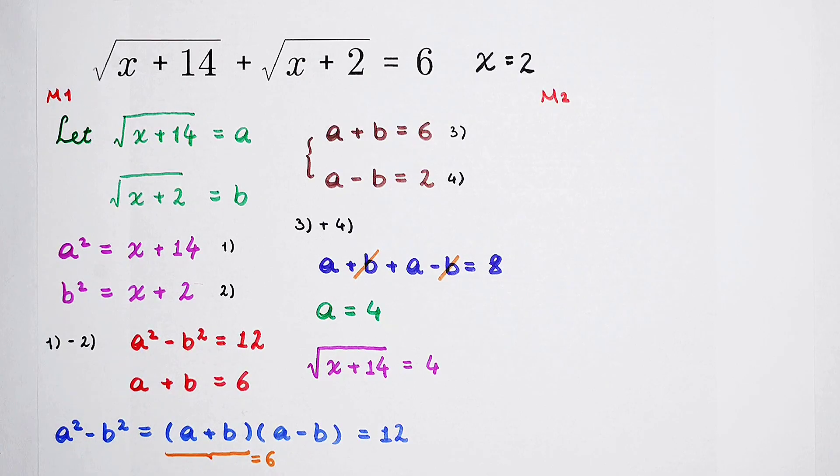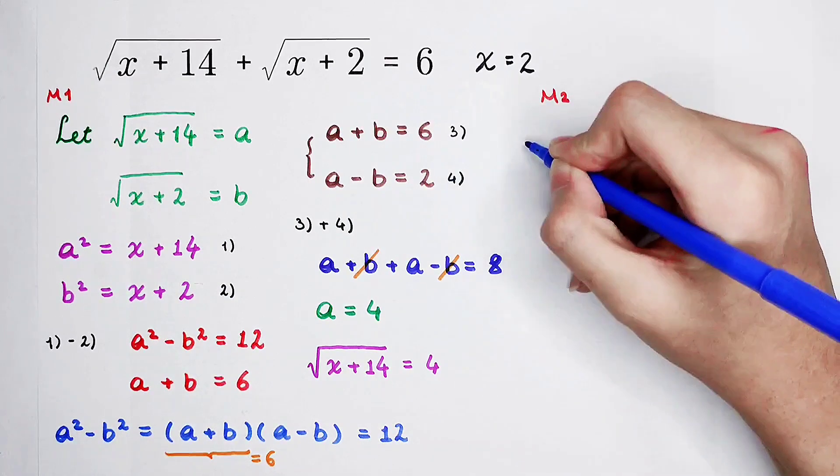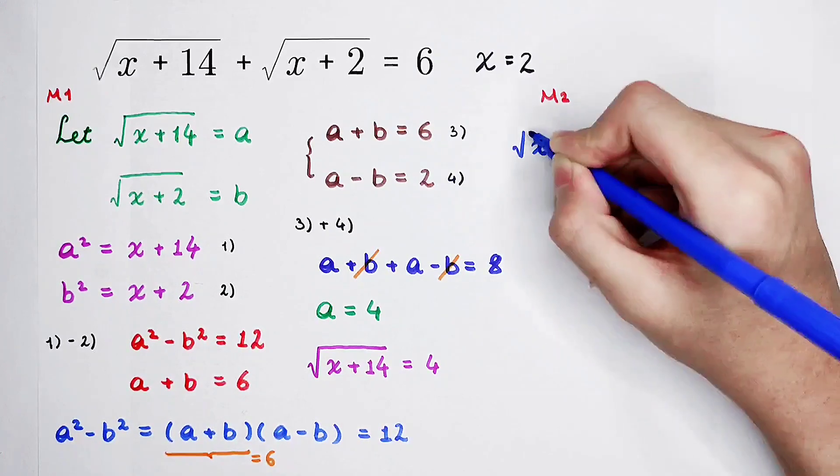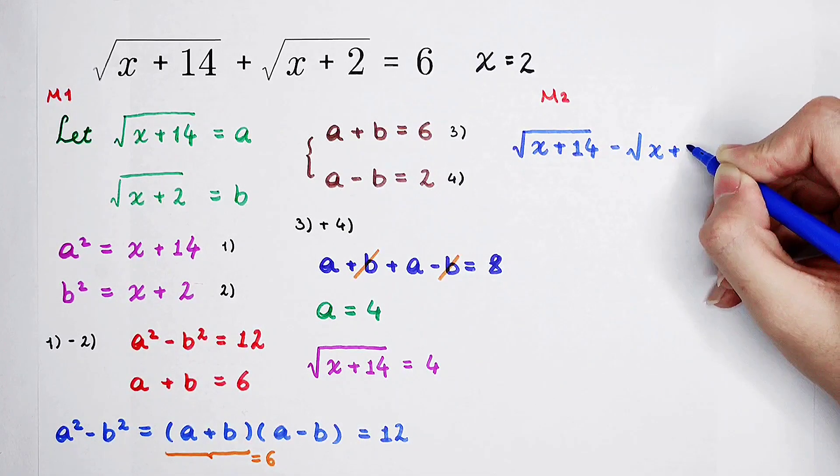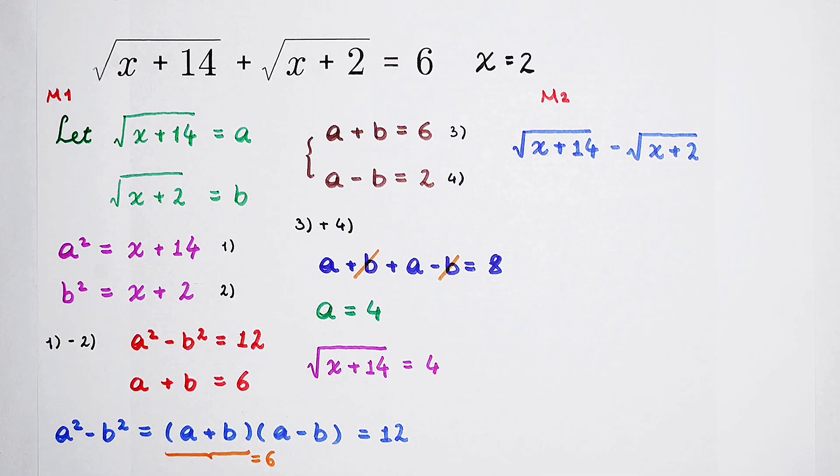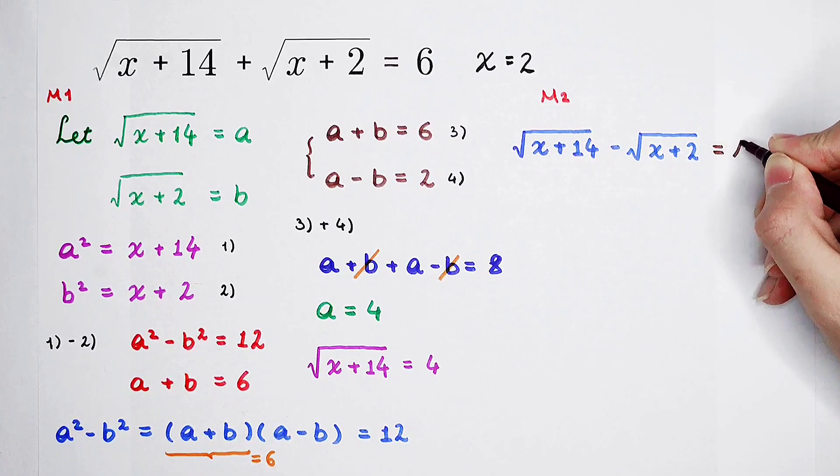Firstly, we have to construct another term. If we can get this term, then the value of x can be solved very easily. This term is the brother term of the left side. It is square root of x plus 14 and then minus square root of x plus 2. This term is 6. But we don't know the value of its brother term. So, we can substitute. We can suppose it is equal to t.